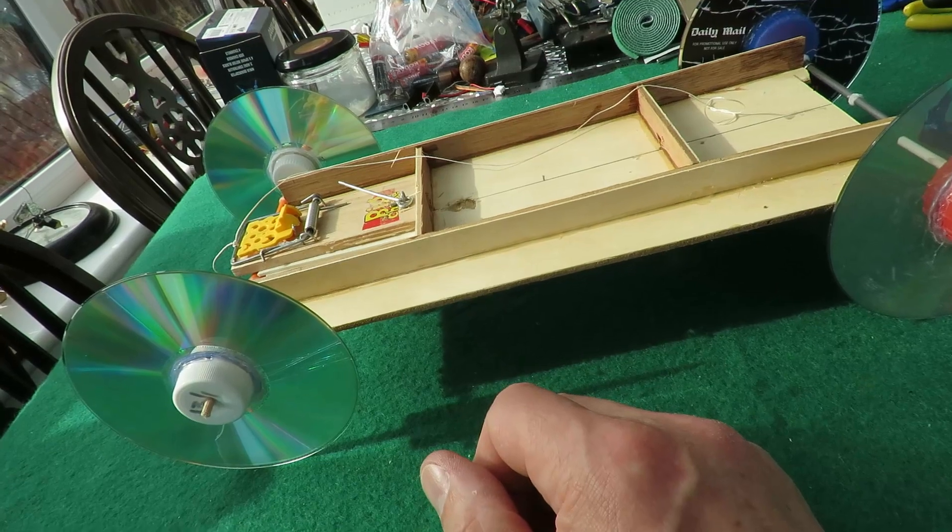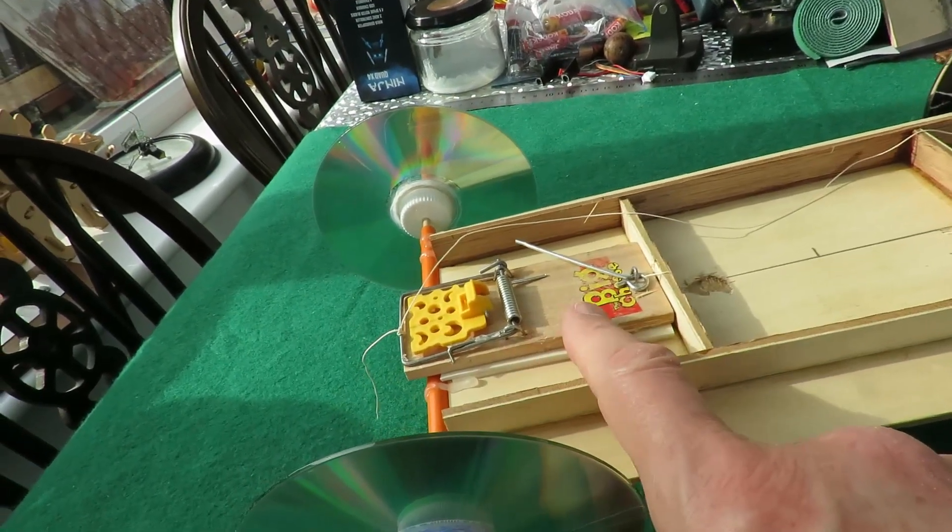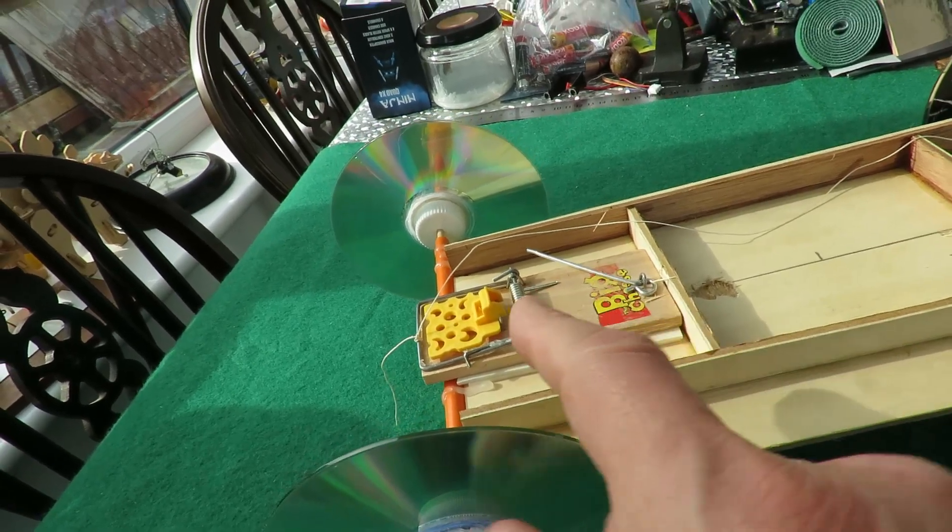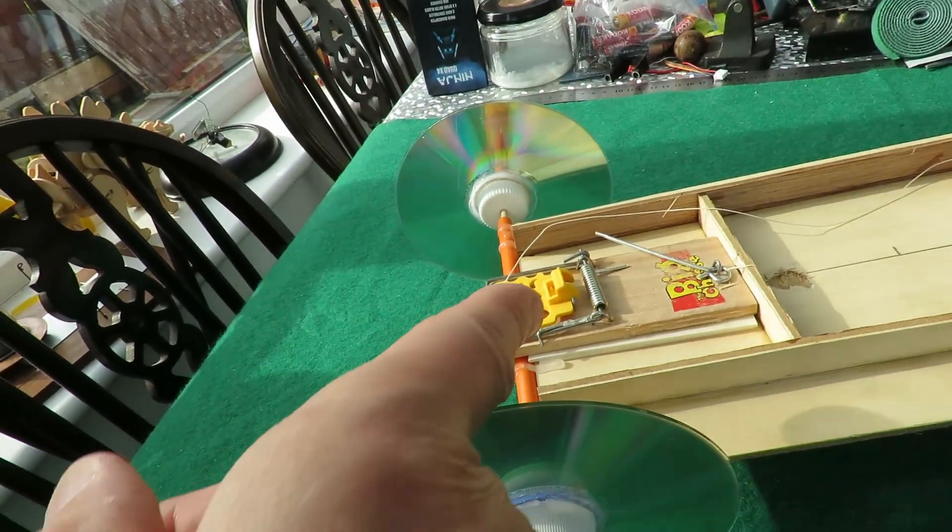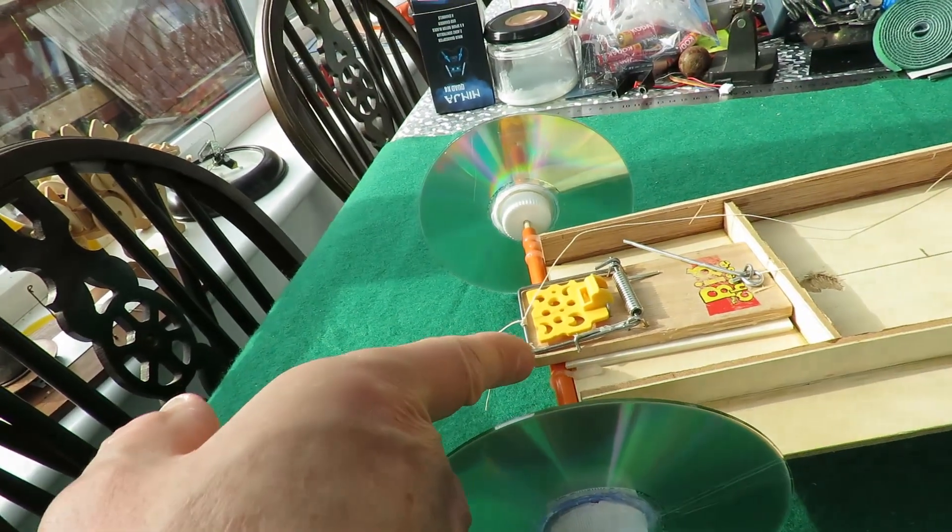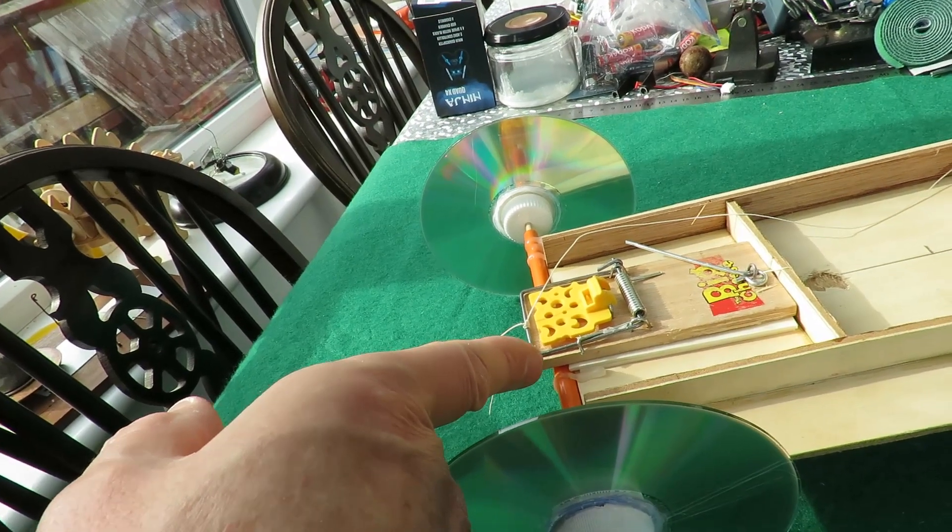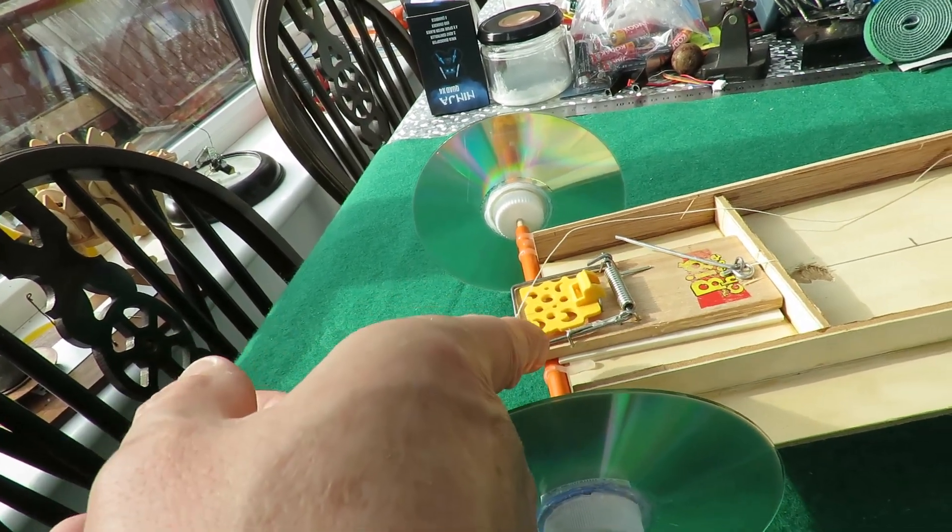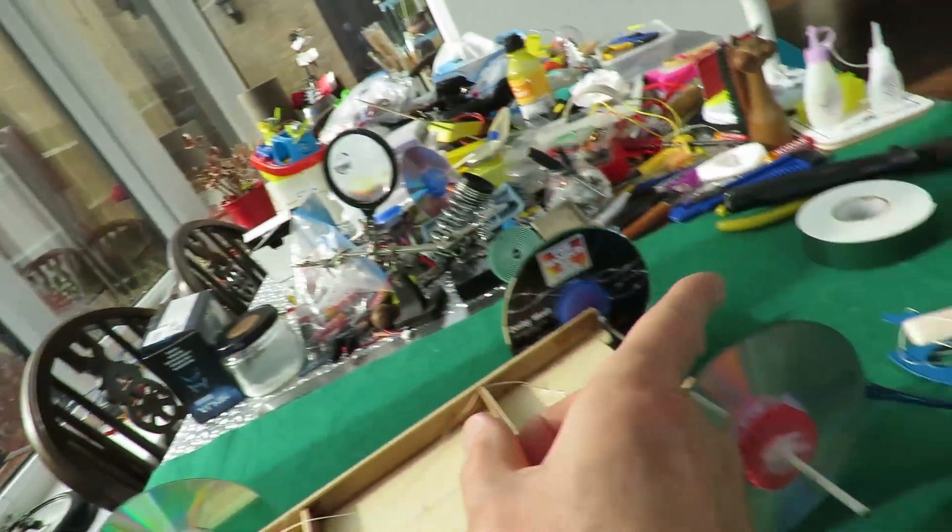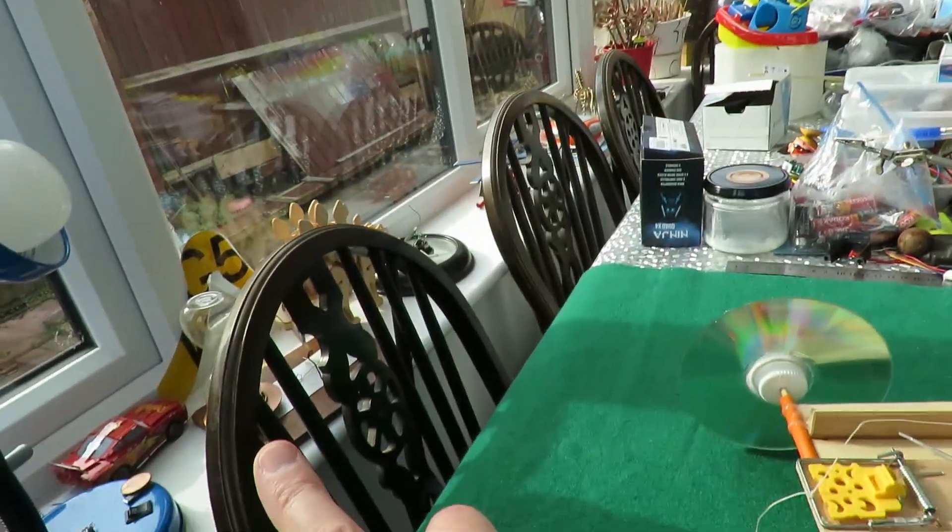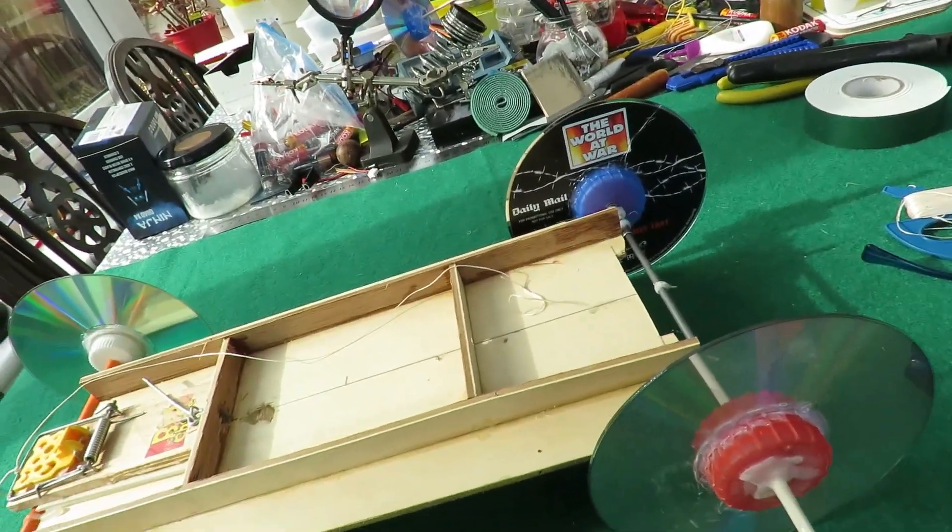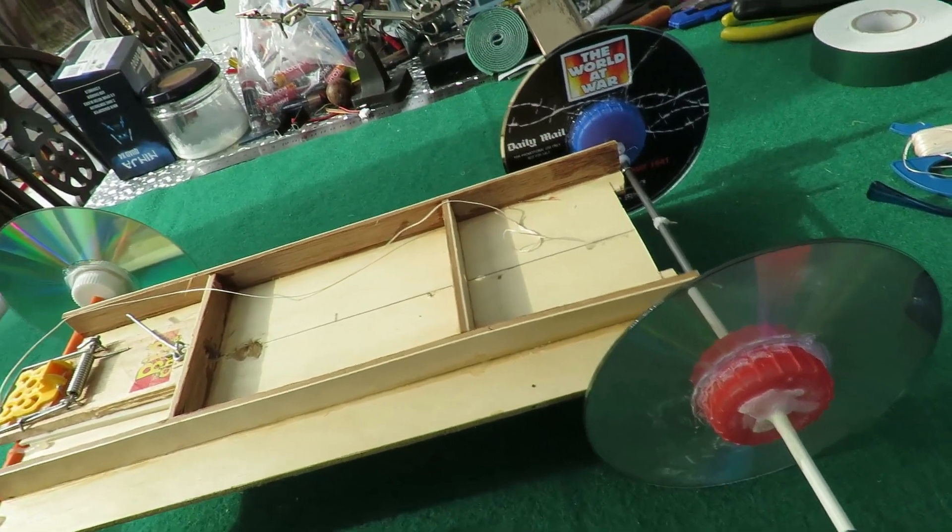And then what we've done today, we've just added a cheap mousetrap. We haven't extended the arm. Most people extend the arm with a long lever, just sort of glue it or tie wrap it to one side of the mousetrap, and that gives you more leverage and more of a distance that it covers, so you can wrap more turns around your axle. But as you can see, this one worked fine and we got 12 meters out of it with no trouble at all.